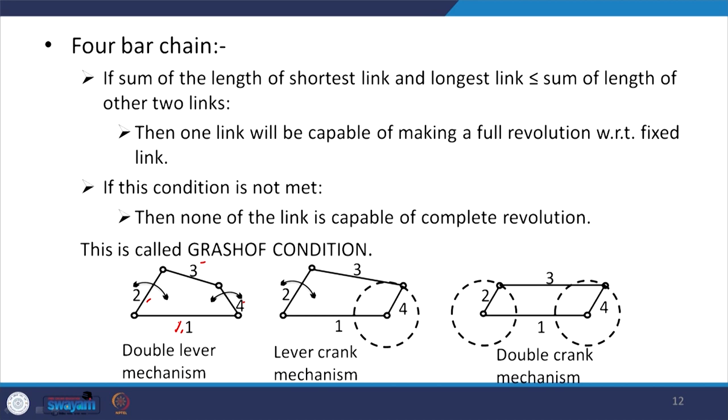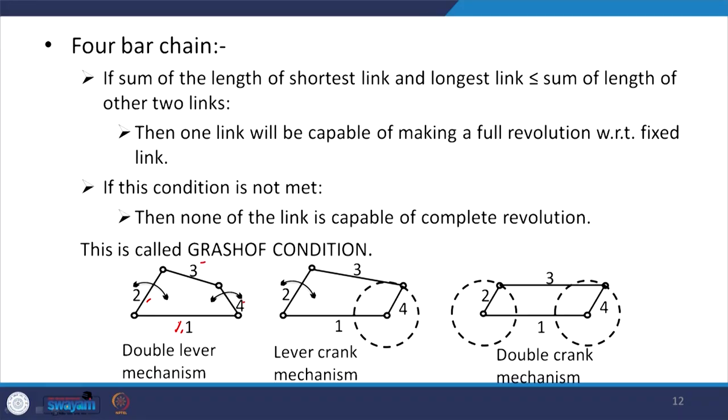In a four-bar chain, if the sum of the length of the shortest link and the longest link is less than or equal to the sum of the lengths of the other two links, then one link will be capable of making a full revolution with respect to the fixed link. If this condition is not met, none of the links can make a complete revolution. This is the Grashof condition. By adjusting link lengths, different motions are possible: a double lever mechanism where both link 2 and link 4 have oscillatory motion.